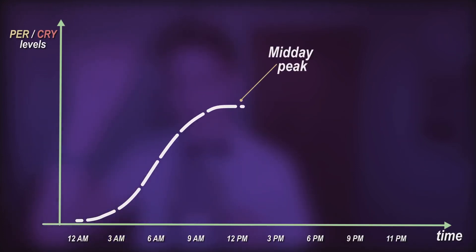If you were to draw a graph, the concentration of per and cry would be lowest at midnight, then it would go up, up, up, peak at midday and then slowly go down. These oscillations of per and cry proteins is basically how your body keeps track of time.